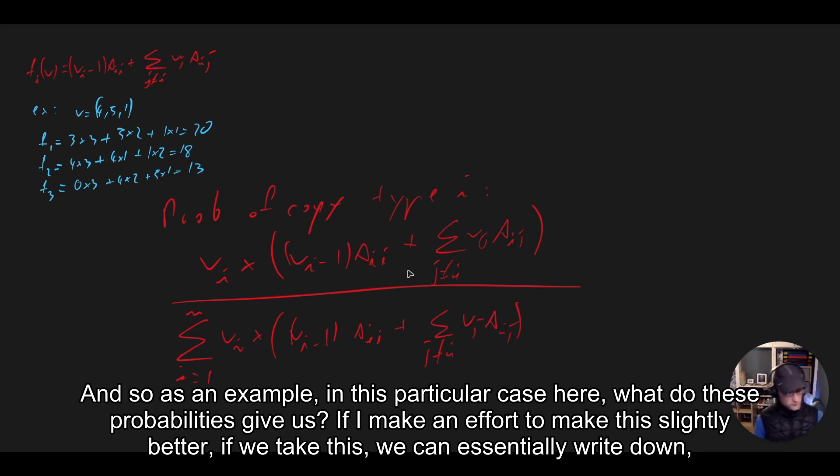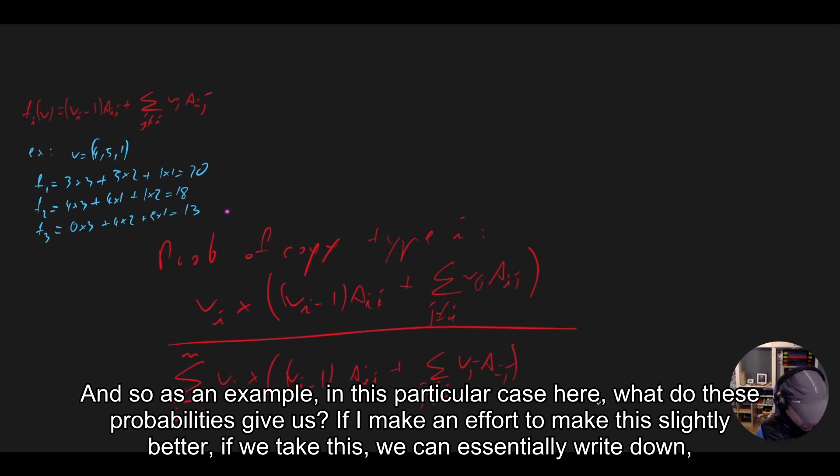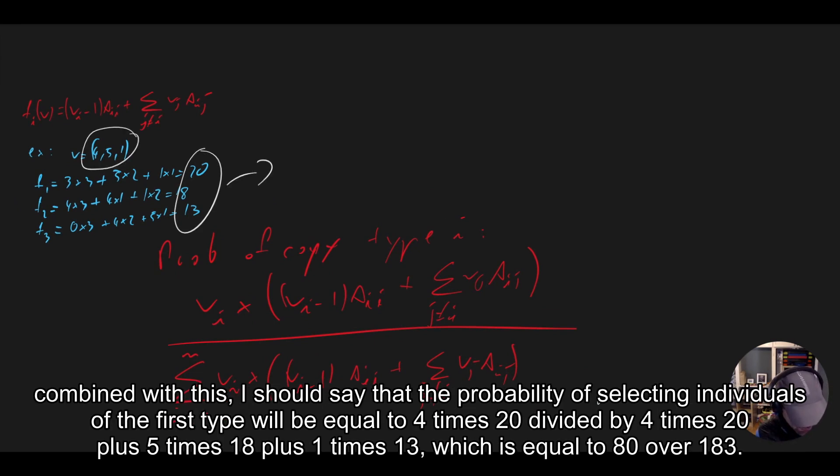And so as an example, in this particular case here, what do these probabilities give us? If I make an effort to make this slightly better, if we take this, we can essentially write down, combined with this I should say,